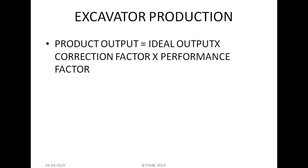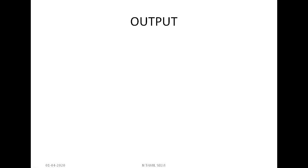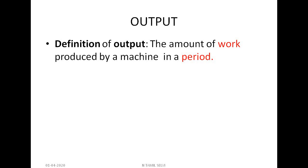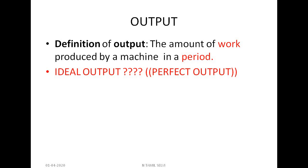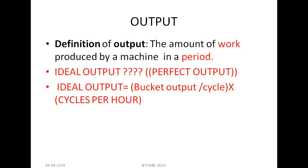We'll see these terms one by one. Output is the amount of work produced by a machine in a particular period. In case of an excavator, ideal output is equal to bucket output per cycle multiplied by cycles per hour.